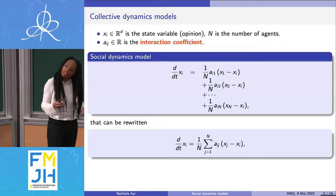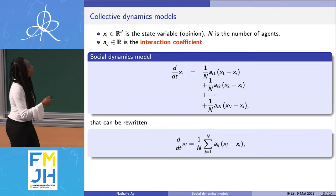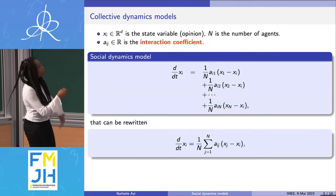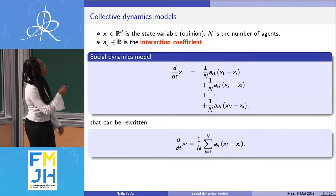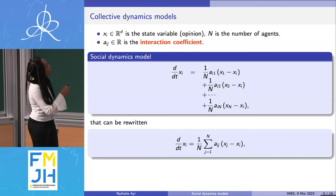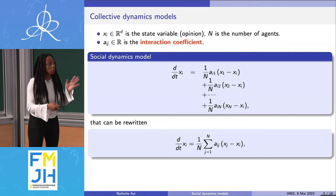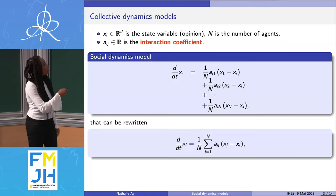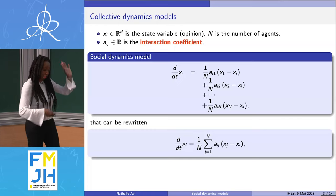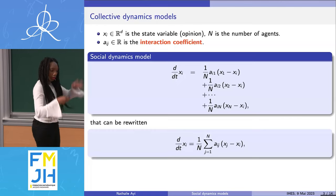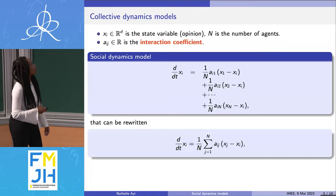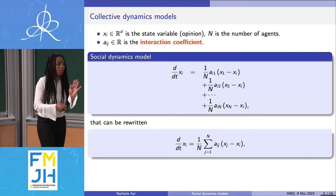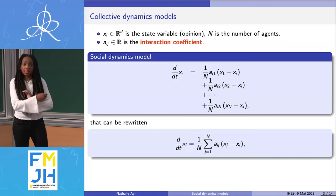We're interested in binary interactions. Agent 1 will impact the evolution of agent i's opinion through the interaction coefficient. We do the same for all the agents — agent 1 impacts agent i, the same for agent 2, the same for agent N. The sum over all agents is summarized by the summation sign, meaning we do the same for all agents. This is the kind of equation we are interested in.